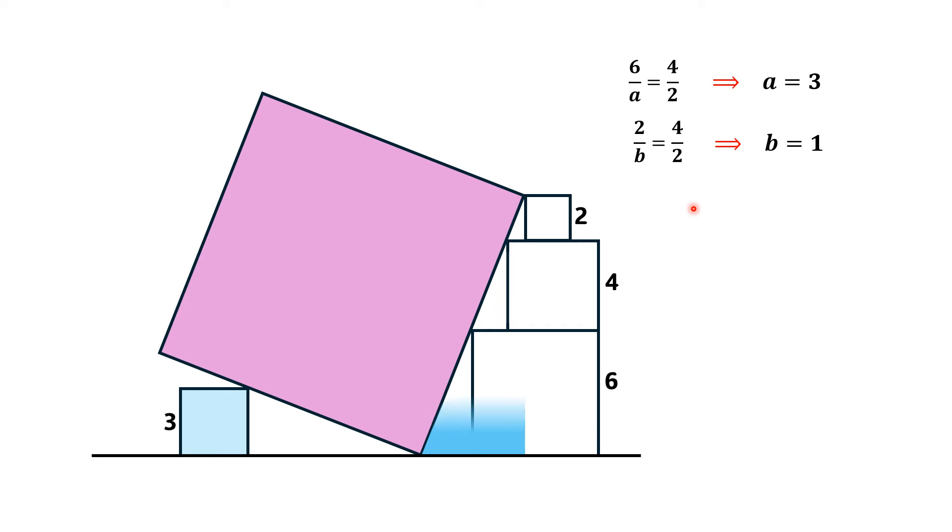Now we consider this larger right triangle. The larger leg of this right triangle is 12, while the smaller leg is 6, since this length is a plus 2 plus b. That is 6, and we call the hypotenuse as x.